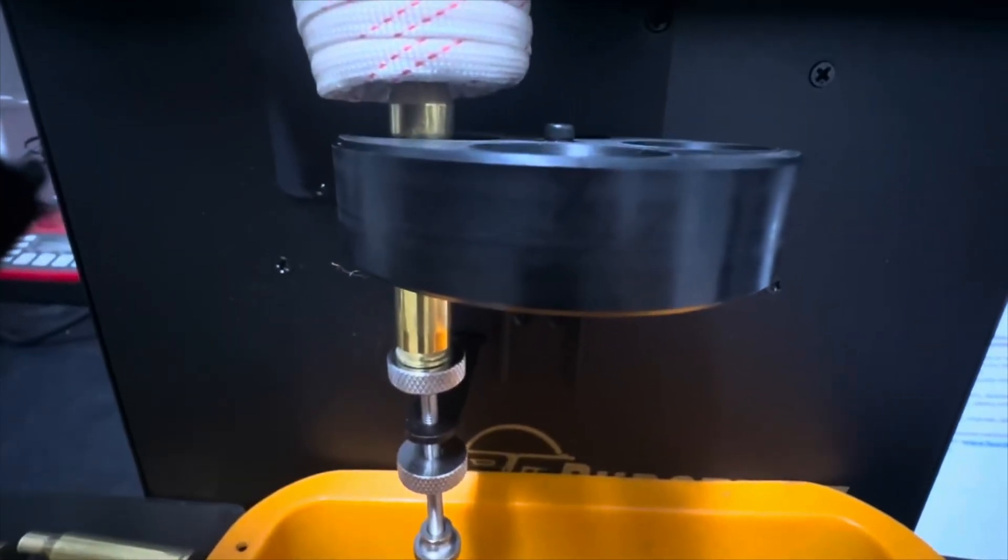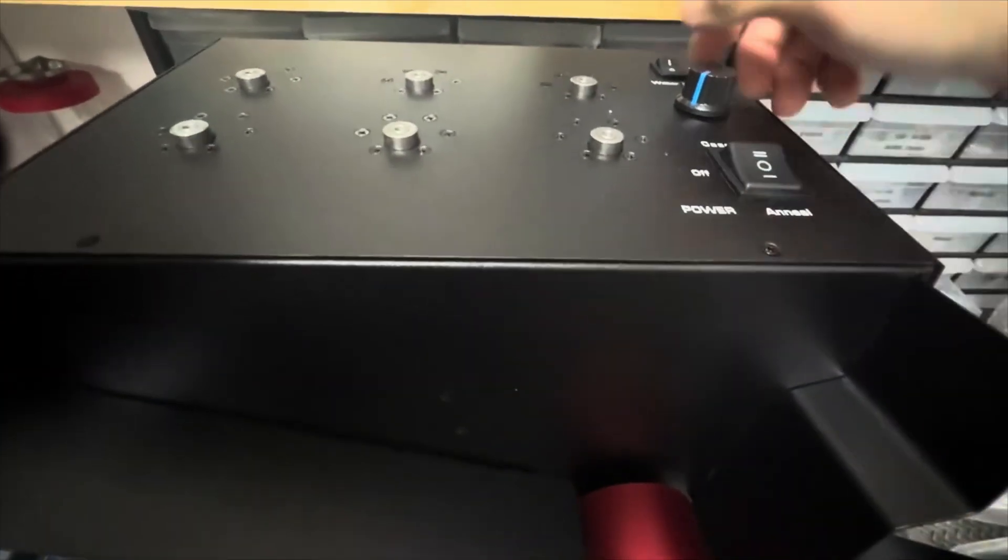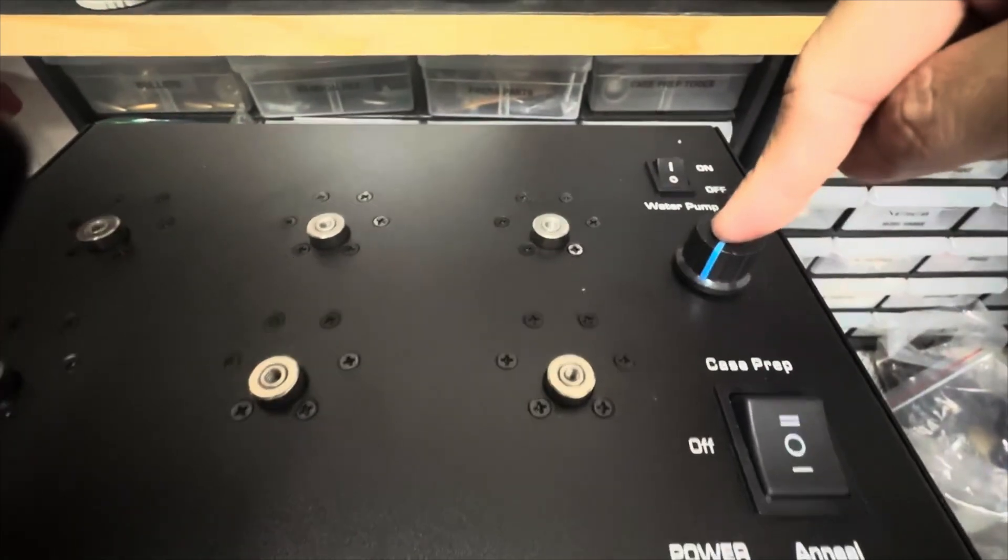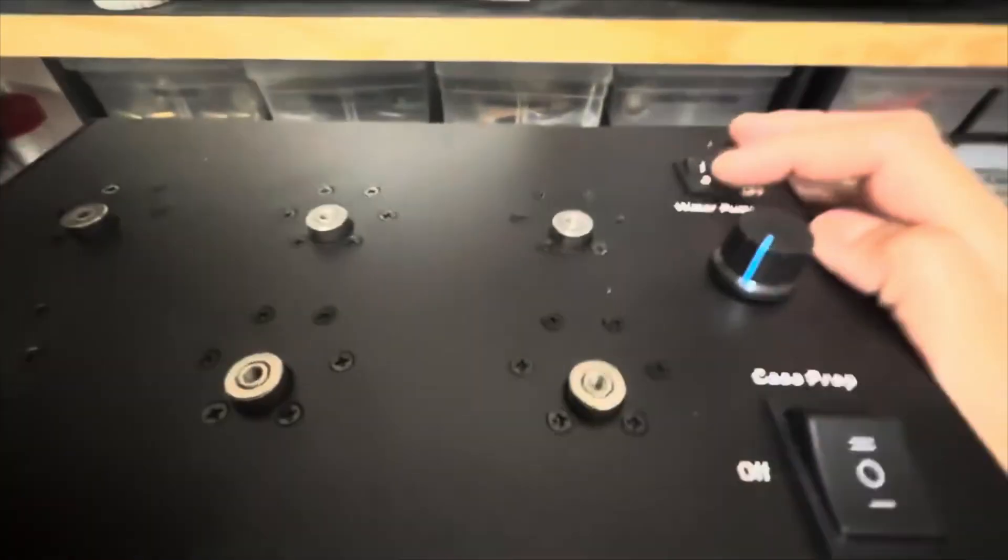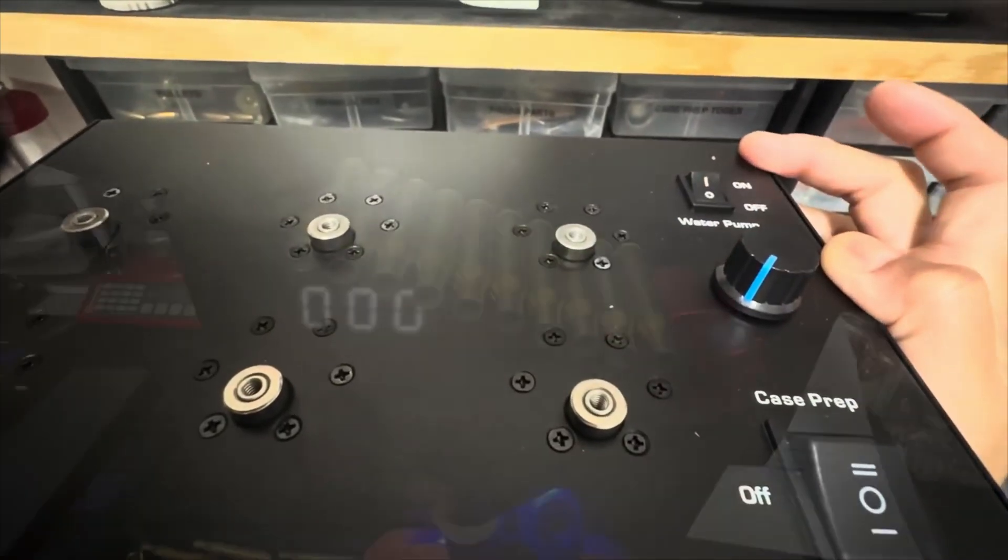Next, we will set the height. Okay, now let's turn on the machine. Let's turn on the annealing function. Put the setting all the way to the lowest at zero, and make sure that the water pump is currently in the off position.